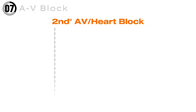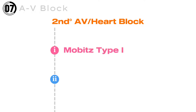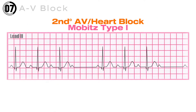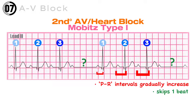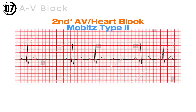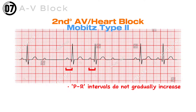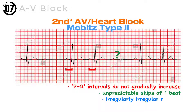The second-degree heart block has two further types: Mobitz Type 1 and Mobitz Type 2. In Mobitz Type 1, the PR intervals gradually increase and then skip a heartbeat — this pattern repeats consistently, making it a regularly irregular rhythm. While in Mobitz Type 2, the PR intervals do not gradually increase and there is a sudden, unpredictable skip of a beat — it doesn't follow the same pattern as Mobitz Type 1. Mobitz Type 2 is an irregularly irregular rhythm and is highly likely to convert into a complete heart block.